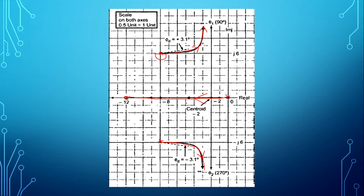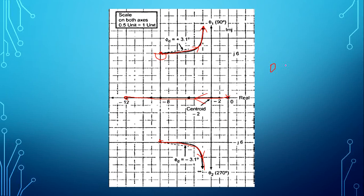Commenting on the stability: the root locus sketch lies completely on the left-hand side of the S-plane. Since K marginal is negative, there is no intersection point with the imaginary axis. For the K range from 0 to infinity, the system is absolutely stable.